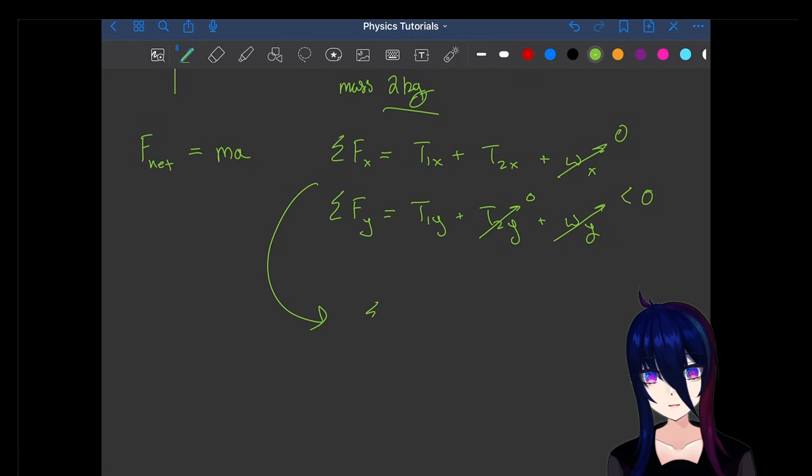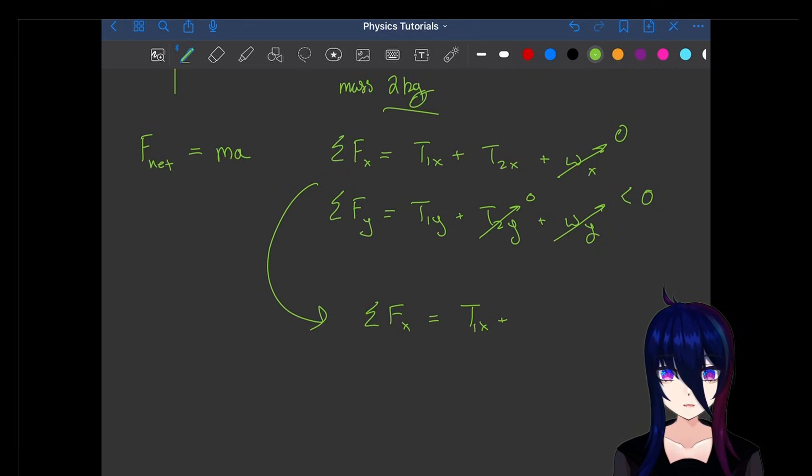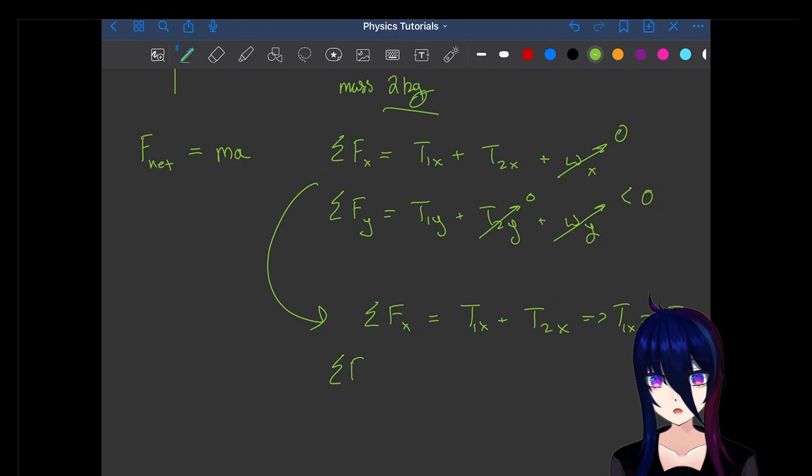Let's reorganize our X force equation. We get T1X plus T2X remaining, which gives us that T1X equals negative T2X. That's because our total force should be zero because the ball's not moving.